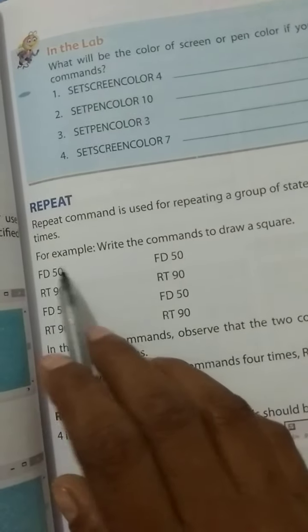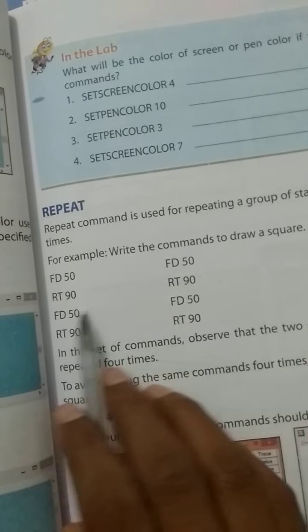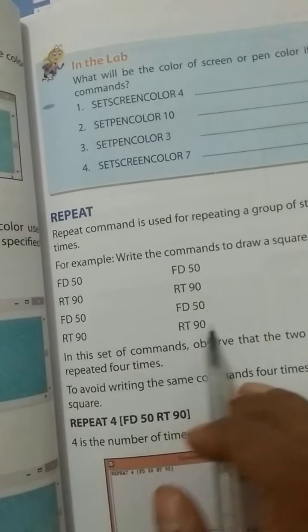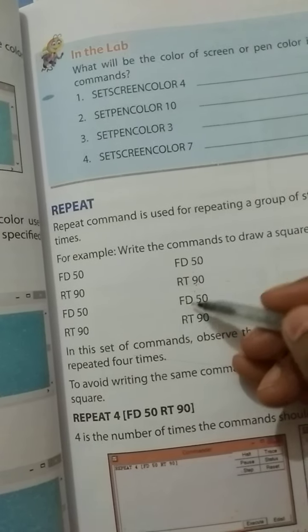Write the command to draw a square: FD 50, RT 90, FD 50, RT 90, FD 50, RT 90, FD 50, RT 90. Here you can see that the process is repeated. That is why it is called the repeat command.